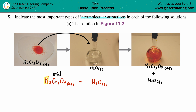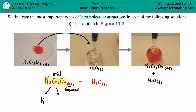The polyatomic ion is dichromate, Cr₂O₇. When an ionic compound is in aqueous solution — aqueous meaning in water — the two components of the ionic compound split into ions. In this case the two ions are potassium, which is in group one on the periodic table so it always has a +1 charge, and dichromate (Cr₂O₇), which is a polyatomic that always carries a 2− charge.